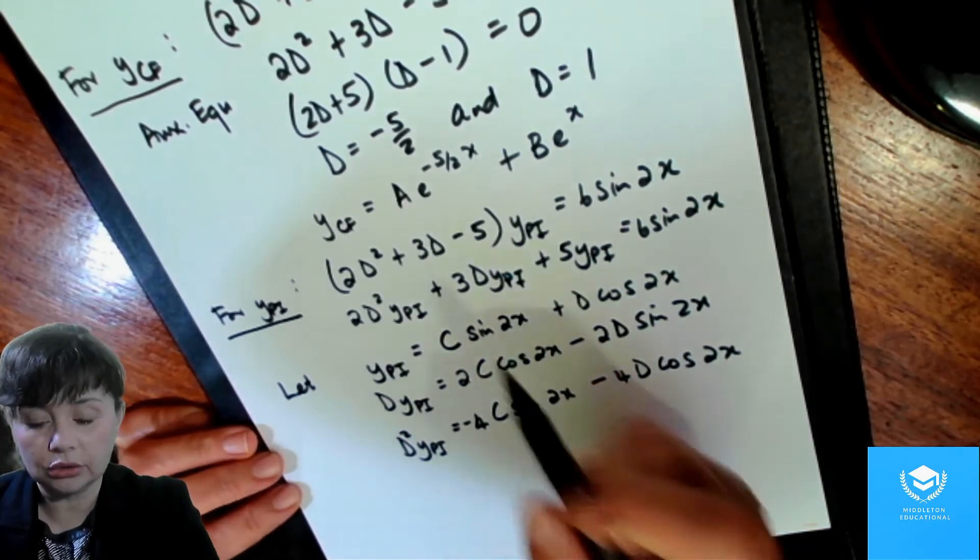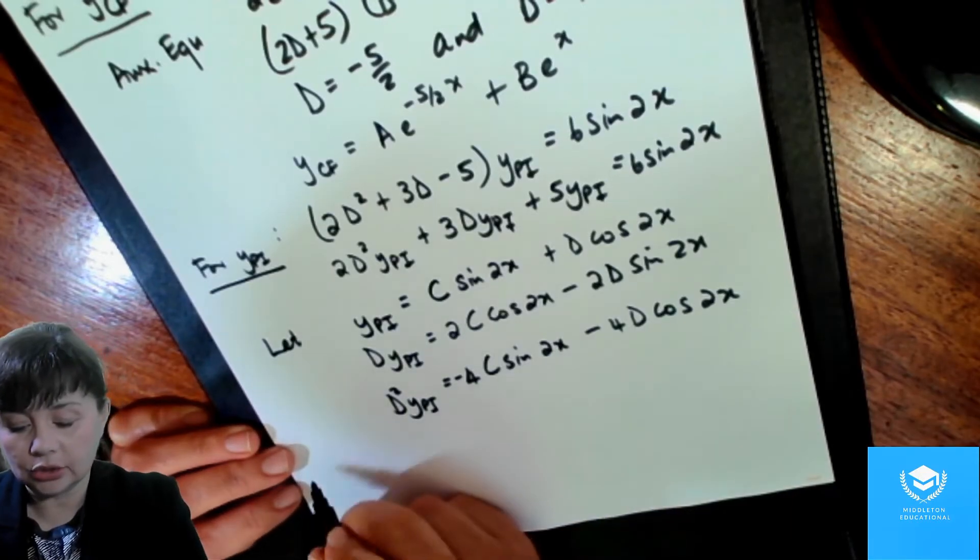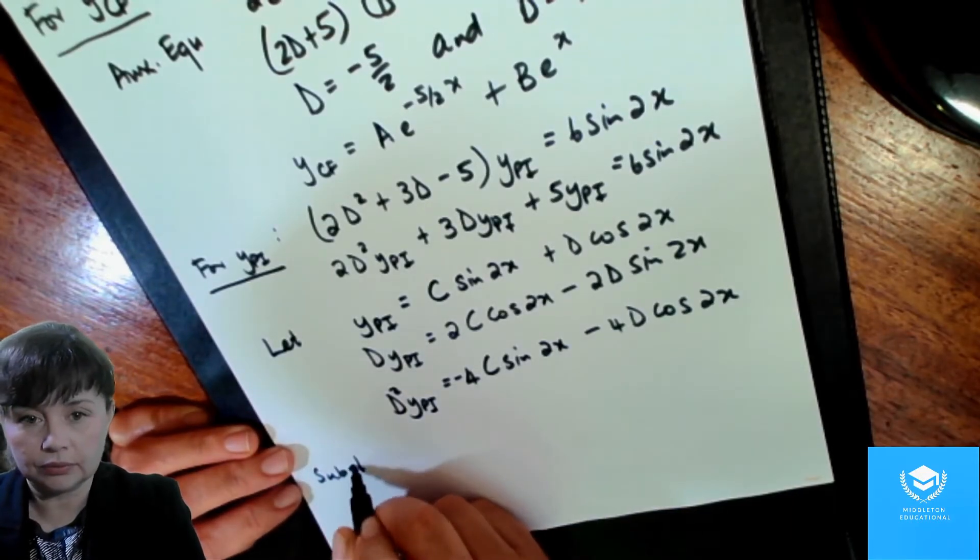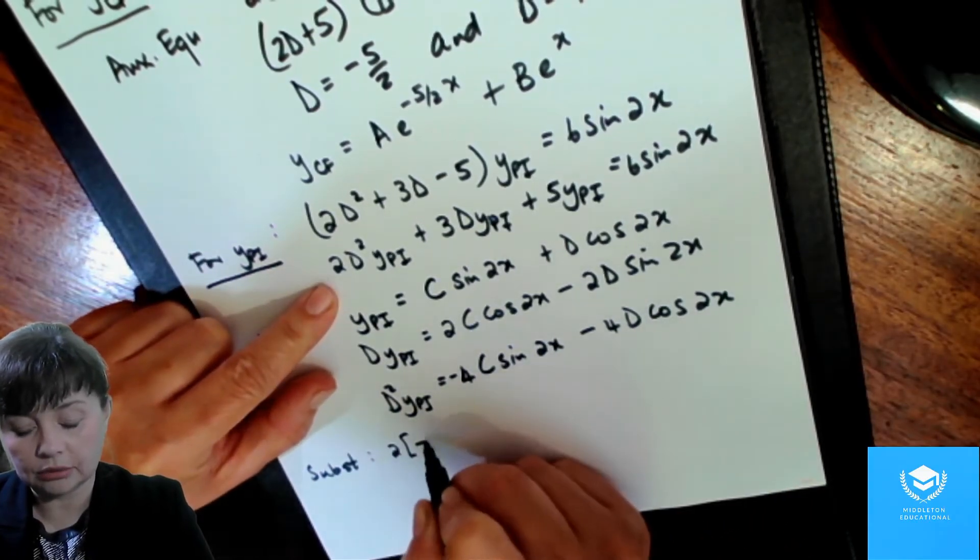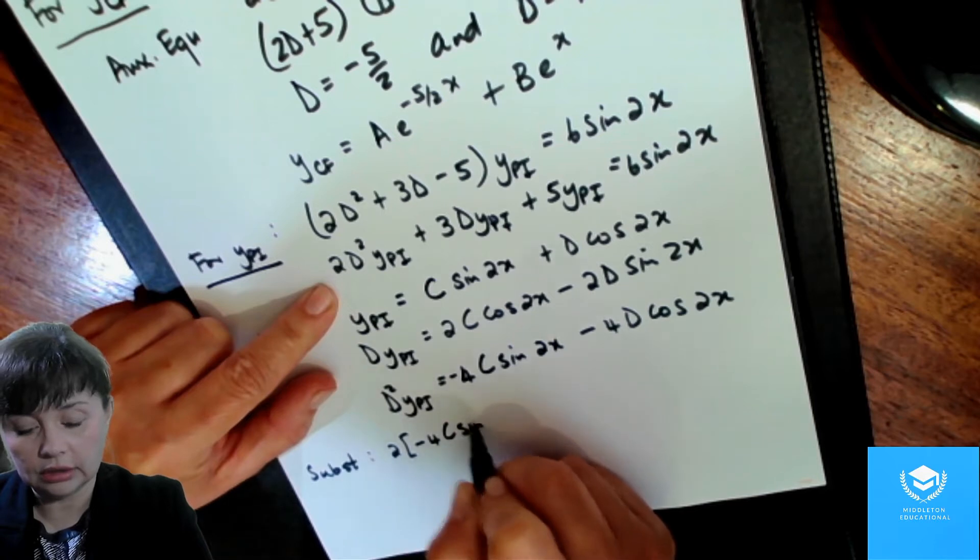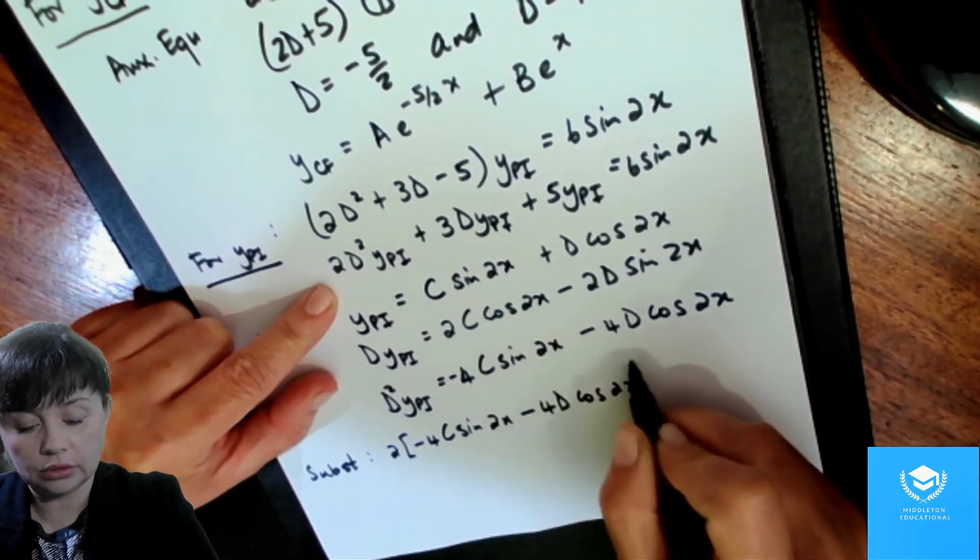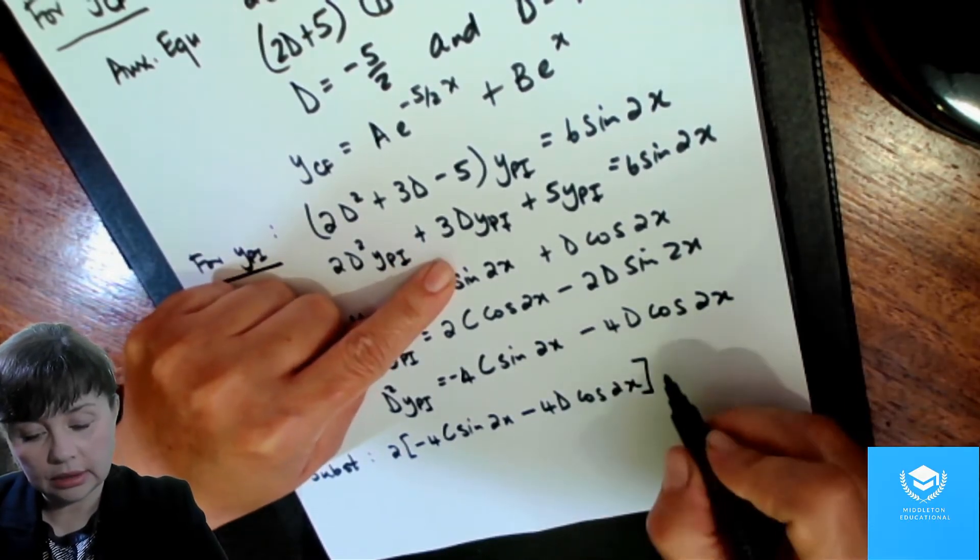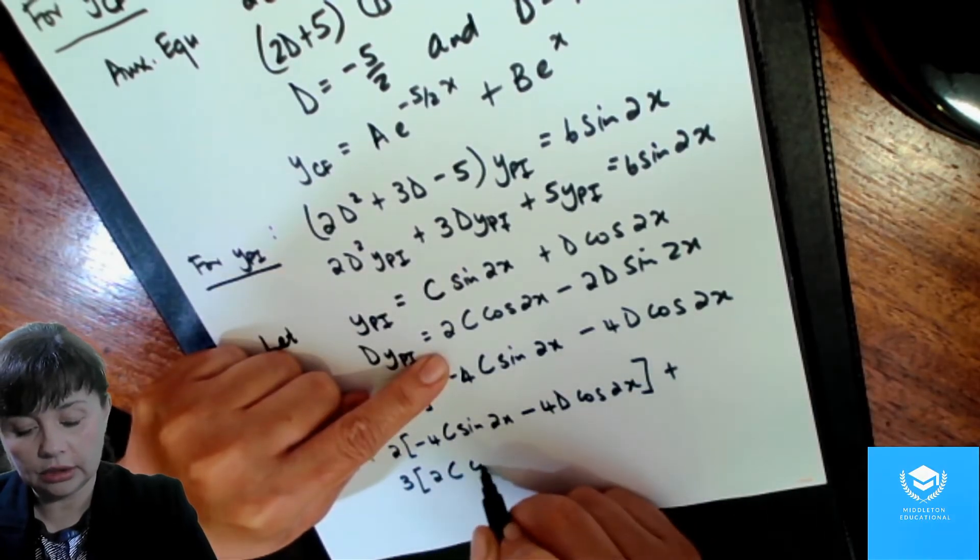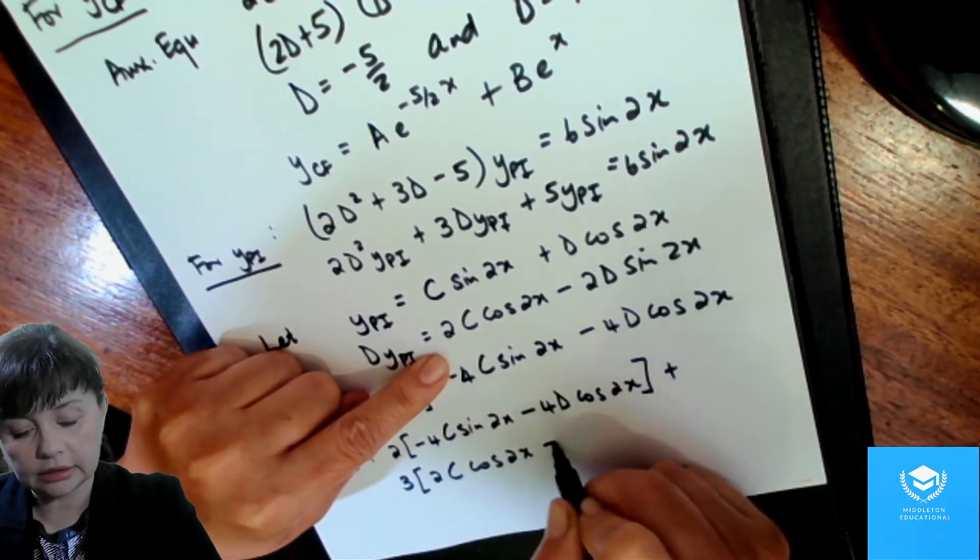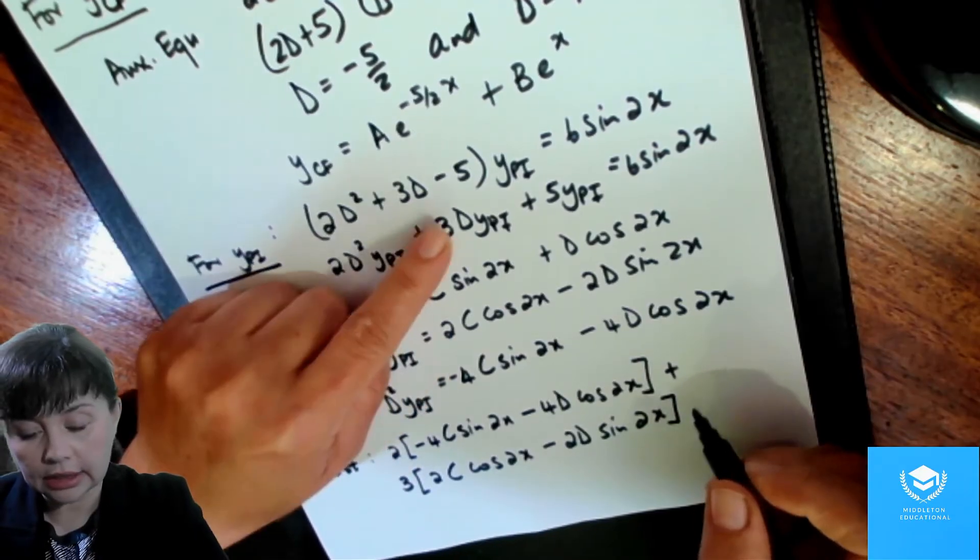So we've got minus 4c sine 2x minus 4d cos 2x. And then we substitute into the differential equation here. So when we substitute, we should get, let's see, it'll be 2 times minus 4c sine 2x minus 4d cos 2x,